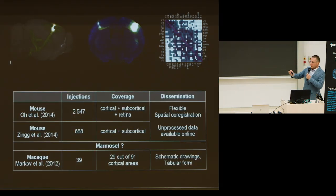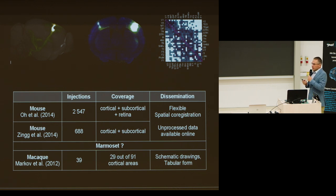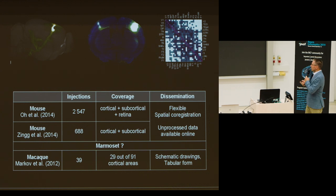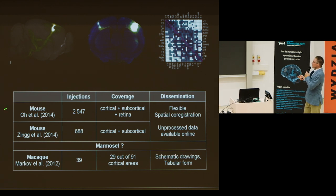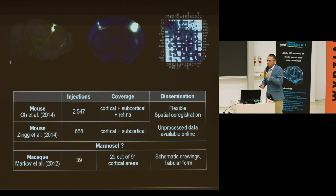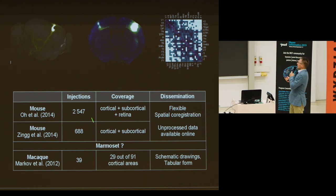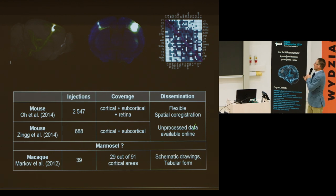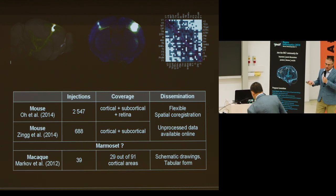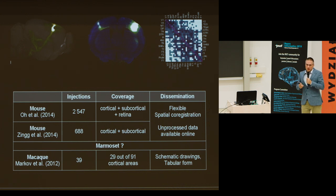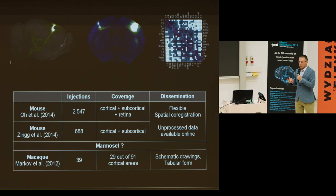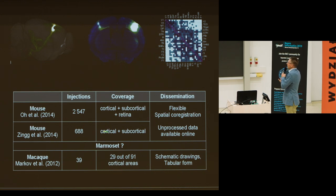Investigating connectivity in primates is extremely challenging. This is evident when we compare existing resources: in mouse connectivity, injections are counted in hundreds if not thousands, covering the entire brain, with data provided in a modern, co-registered format available online. For primates, we simply do not have this throughput—it's much more challenging. Perhaps we can place marmosets somewhere in between to fill this gap.